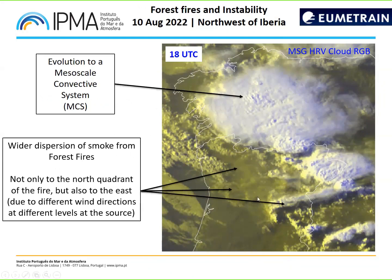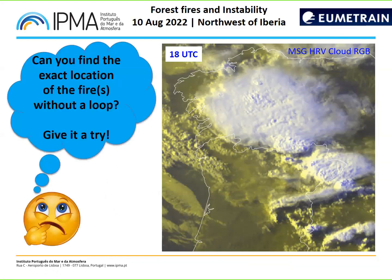Now for an interactive exercise — participants can annotate on screen to find the exact location of the fires in this image. Even without a loop animation, give it a try. I can see that participants are choosing areas outside the mesoscale convective system, which is a good approach. I will discuss one or two specific forest fires. We can confirm fire locations using hotspot products — the fire radiative power from LandSAF using MSG, which gives measurements in megawatts.